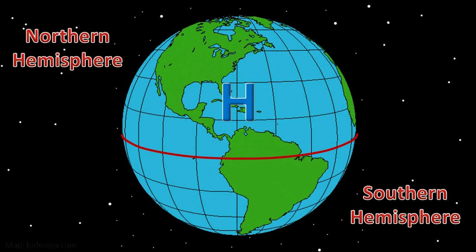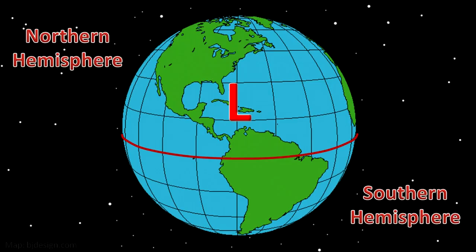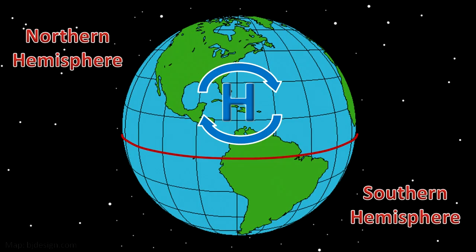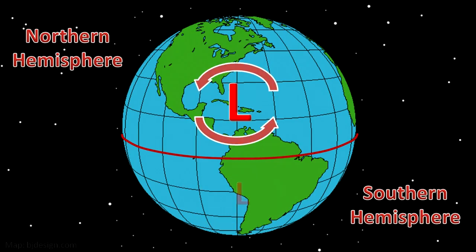In the northern hemisphere, winds rotate in a clockwise motion around an area of high pressure, while winds rotate counterclockwise around an area of low pressure. In the southern hemisphere, the motions are reversed — counterclockwise around high pressure and clockwise around low pressure. But how winds act around each of these systems is only one part of the forecasting puzzle.